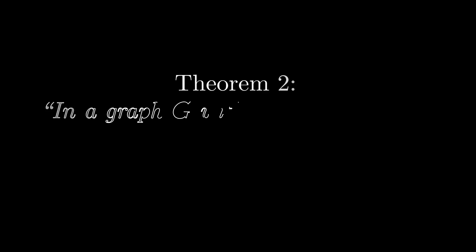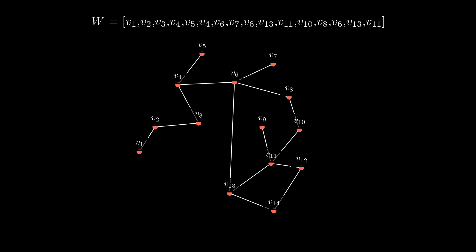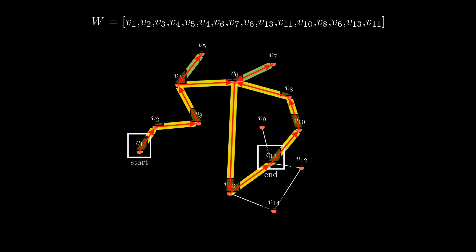Now this fact is summarized in theorem 2. In a graph G with vertices U and V, every UV walk contains a UV path. To understand the proof, let us look at this example. We have this graph and we have this walk from vertex V1 to V11.